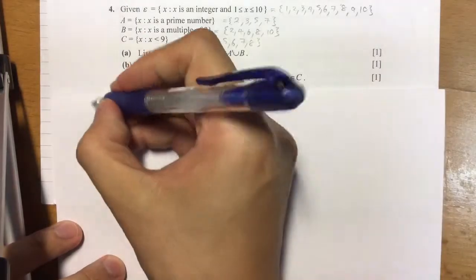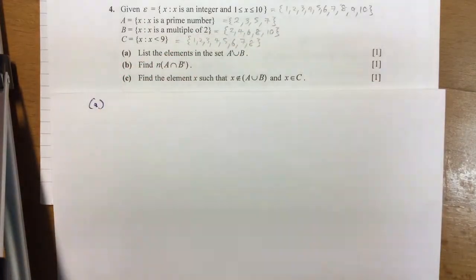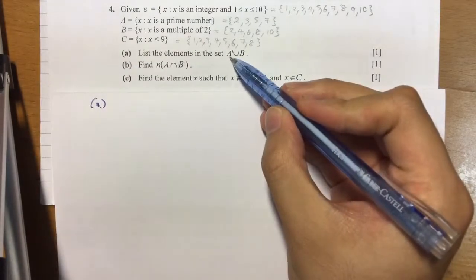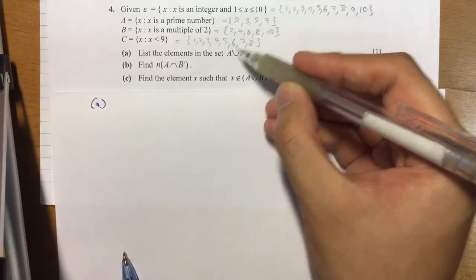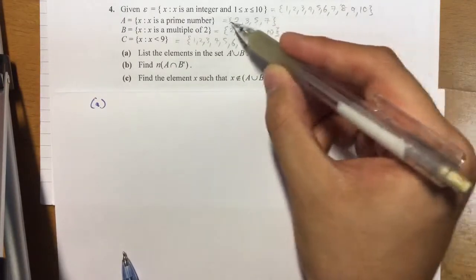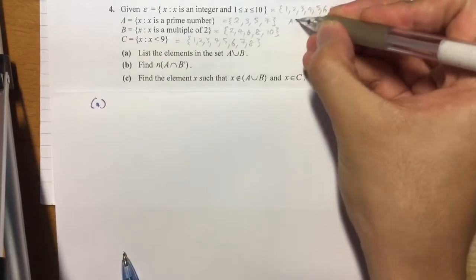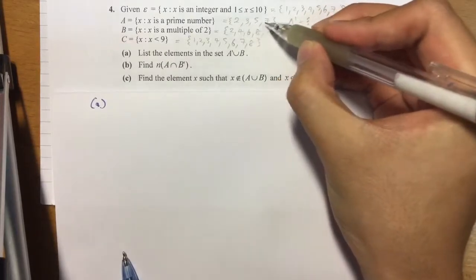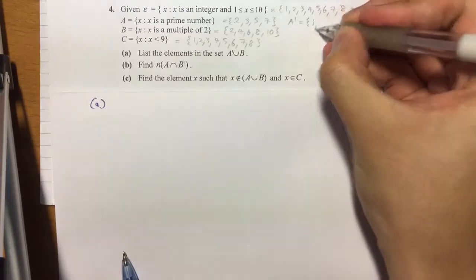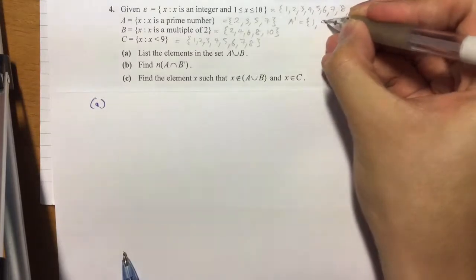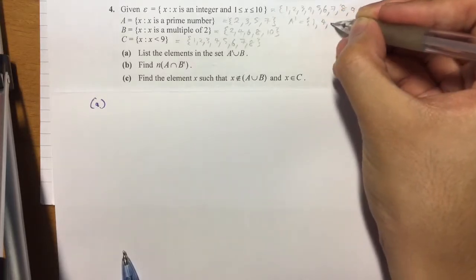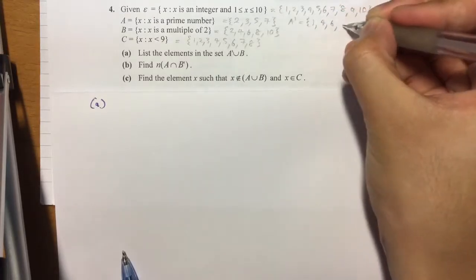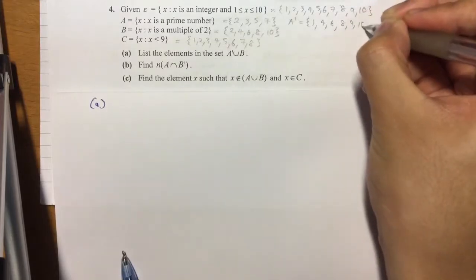Very first question, part a. List the elements inside A complement union B. So you realize, I don't have A complement yet. So all I have to do is look at the numbers inside A and then also write out A complement. So if 2, 3, 5, 7 are already inside, all I have to do is list out all the other numbers which are not inside here but still within the universal set. So we have 1, 4, 6, 8, 9 and 10.